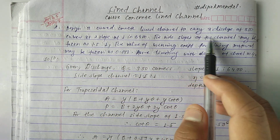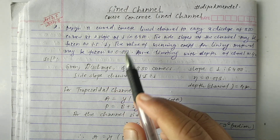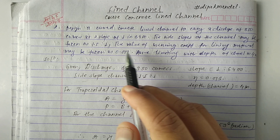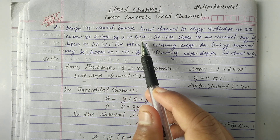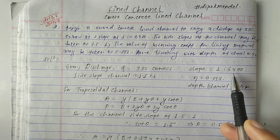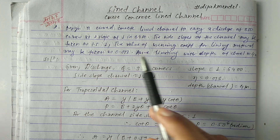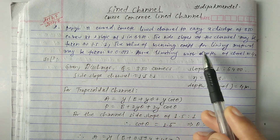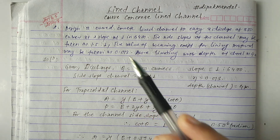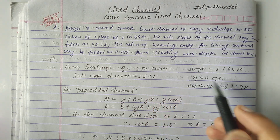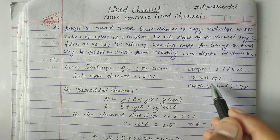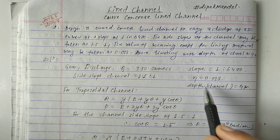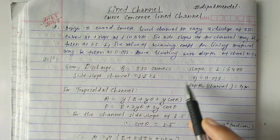The question: design a curved concrete or lined channel to carry a discharge of 350 cubic meters per second, at a slope of 1 in 6400. The side slope of the channel may be taken as 1.5 to 1. The value of Manning's coefficient for the lining material may be taken as n = 0.013. Assume the limiting water depth of the channel is 4 meters. So this is all the given data.